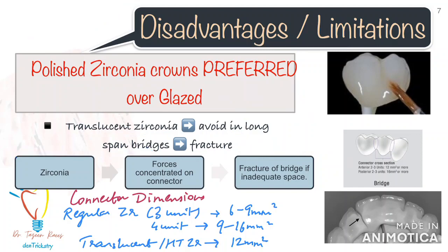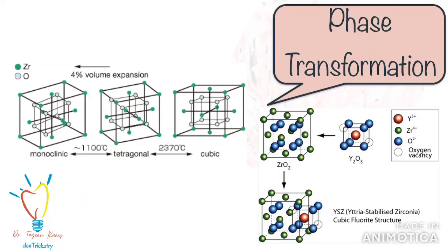Now that we are done with the basic understanding of the material and know why zirconia restorations are so much in demand, let's delve a little into the material properties. Knowledge about the materials we use in routine practice helps us make better decisions and give better outcomes to the patient. We have already discussed translucent, high-translucent, and regular zirconia — so what makes them different?